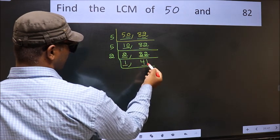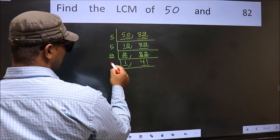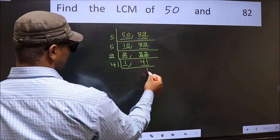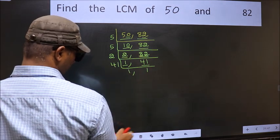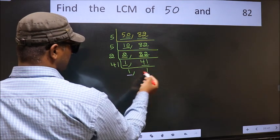So focus on the other number, 41. 41 is a prime number, so 41 times 1 is 41. So we got 1 in both the places.